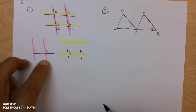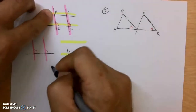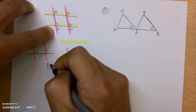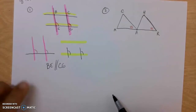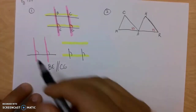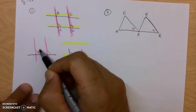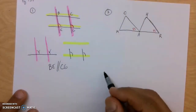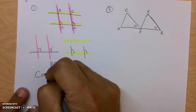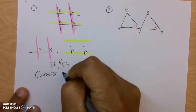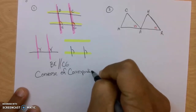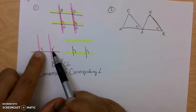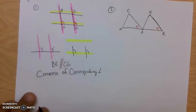The correct answer here is that the two lines that are parallel are these pink ones going up and down. So we're going to say BE is parallel to CG, and we need to know a reason why those two lines are parallel. Because these are top right corner, top right corner — those are corresponding angles. So the reason why they are parallel is because of the converse of corresponding angles, which basically means if you've got two corresponding angles that are equal, that forces the two pink lines to be parallel.